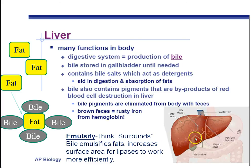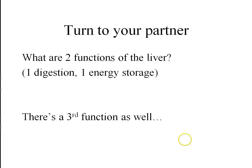Bile also sometimes tastes really nasty if it comes back up into your throat, and people use that to refer to something that leaves a bad taste in the mouth. So the digestive function, once again, is bile. The energy storage function is as glycogen — the liver can store glucose in chains called glycogen, also known as animal starch. The third function is detoxification, which we'll talk about in a future chapter — basically it's going to convert ammonia into urea.